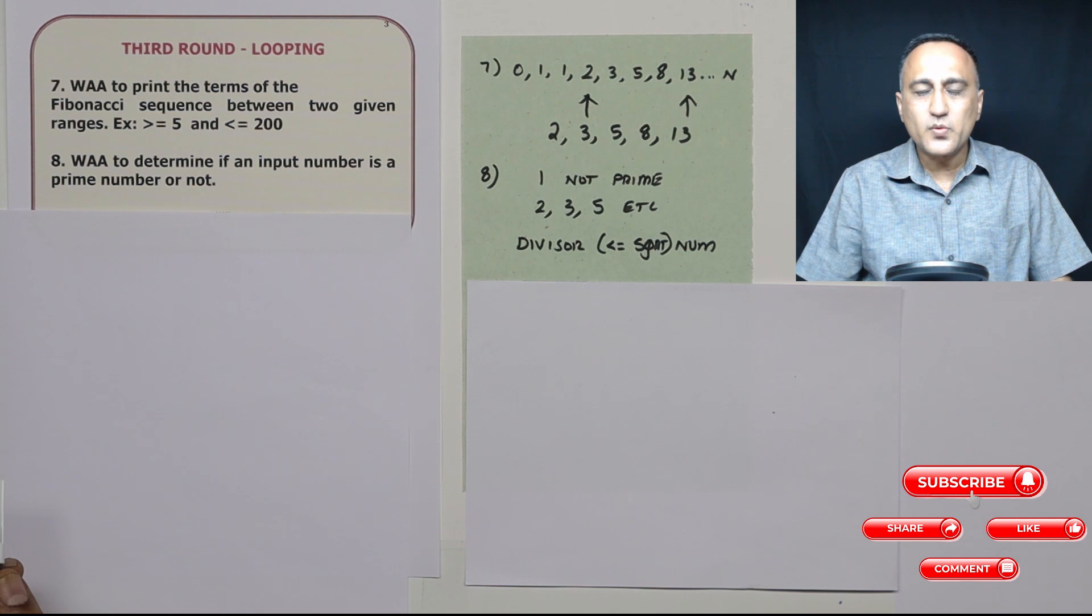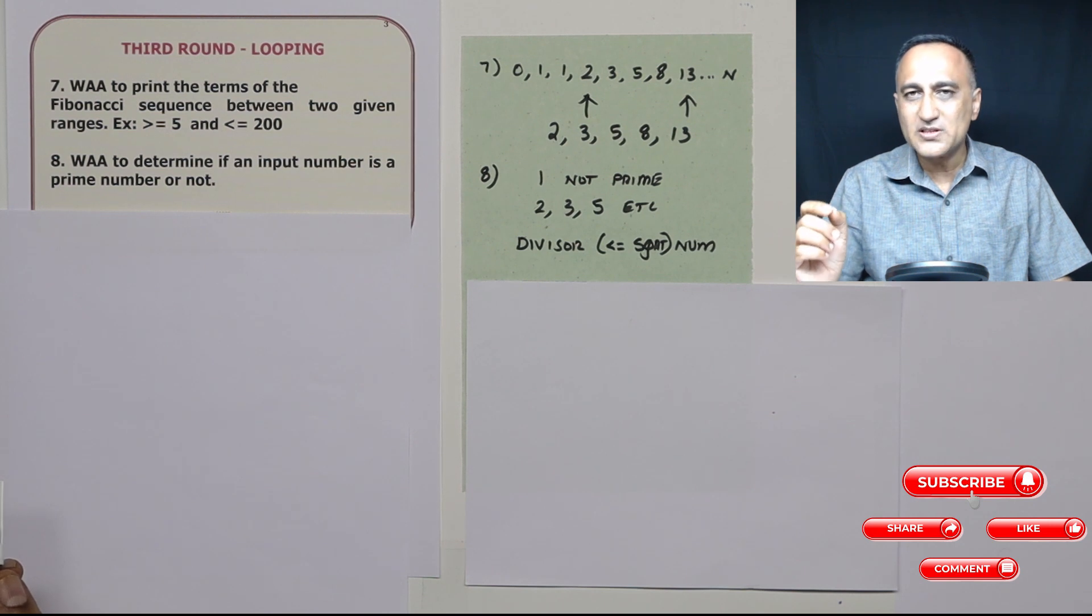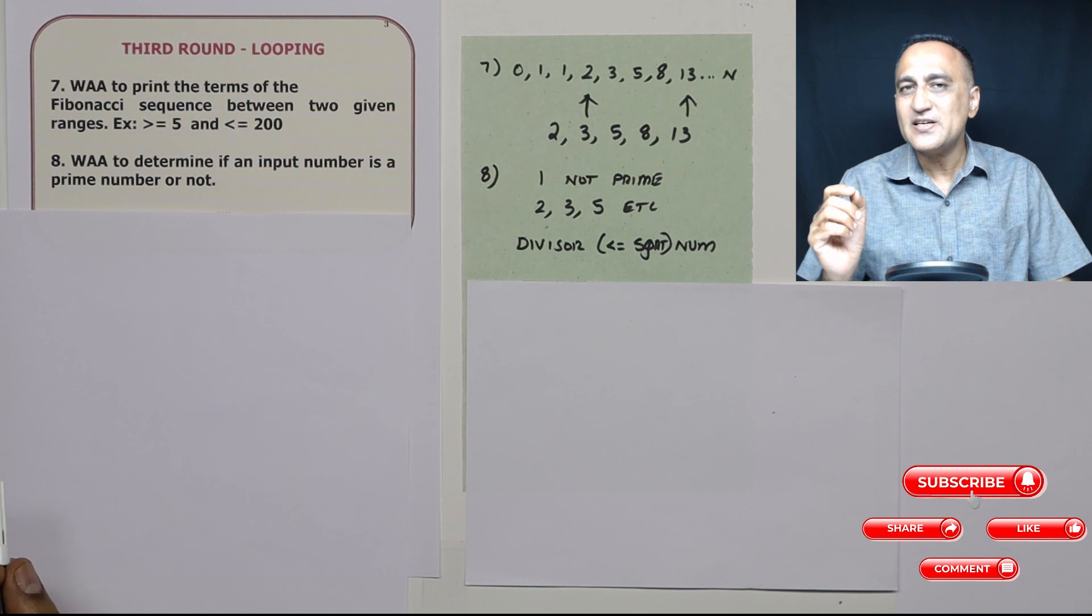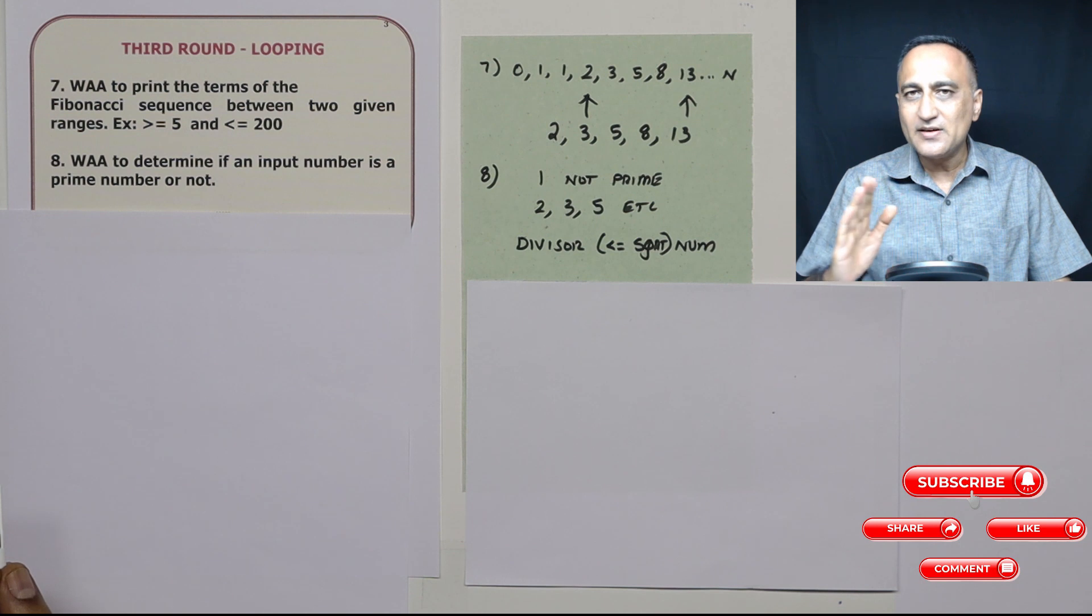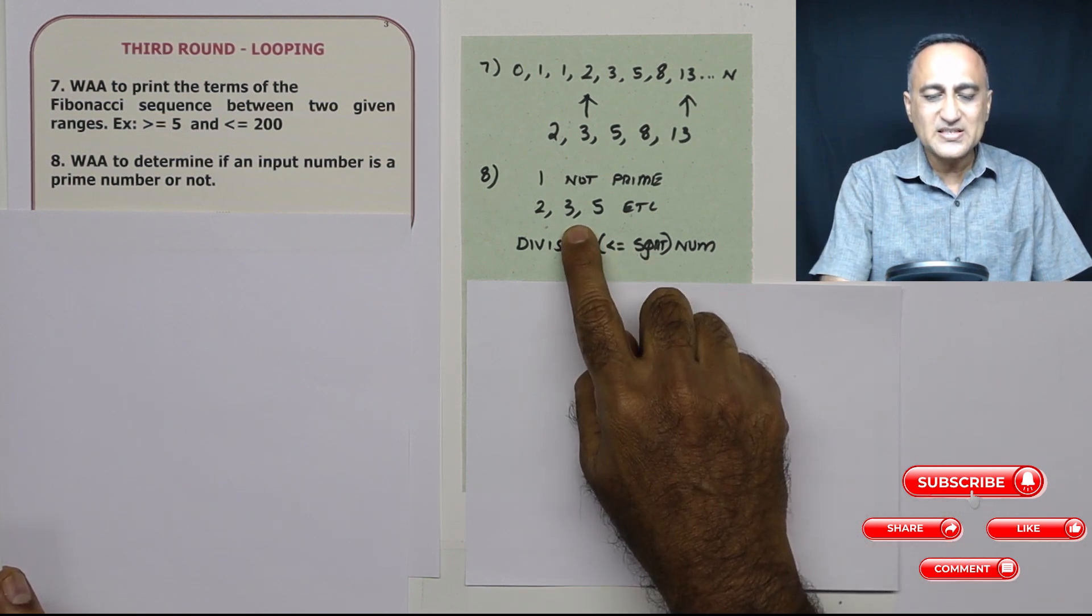Now the way you should work with this prime number logic is quite simple. Given a number, you will check whether that number is first divisible by two. This way you're eliminating all the even numbers. After that, you will start the divisor as three.